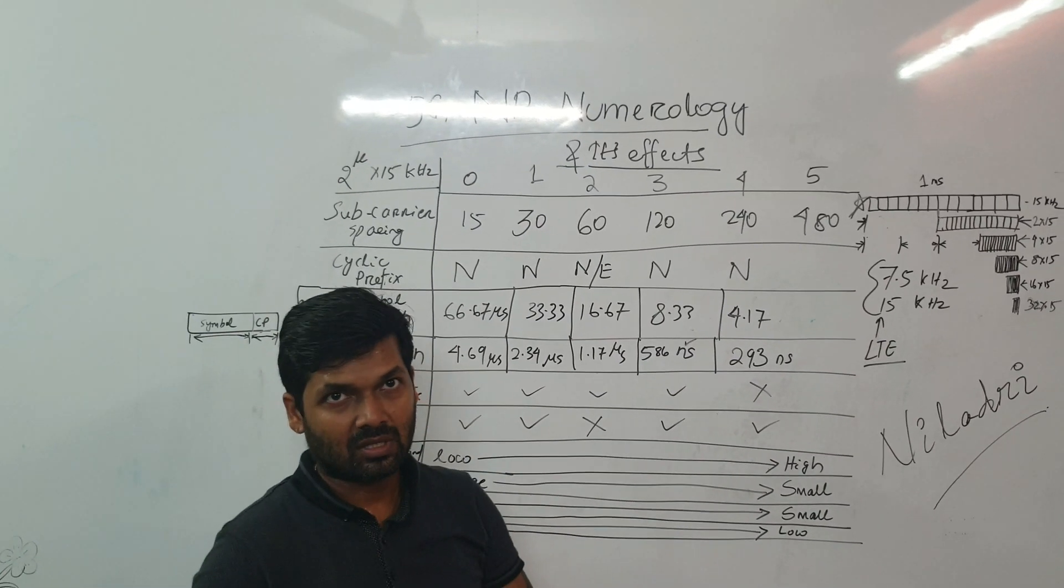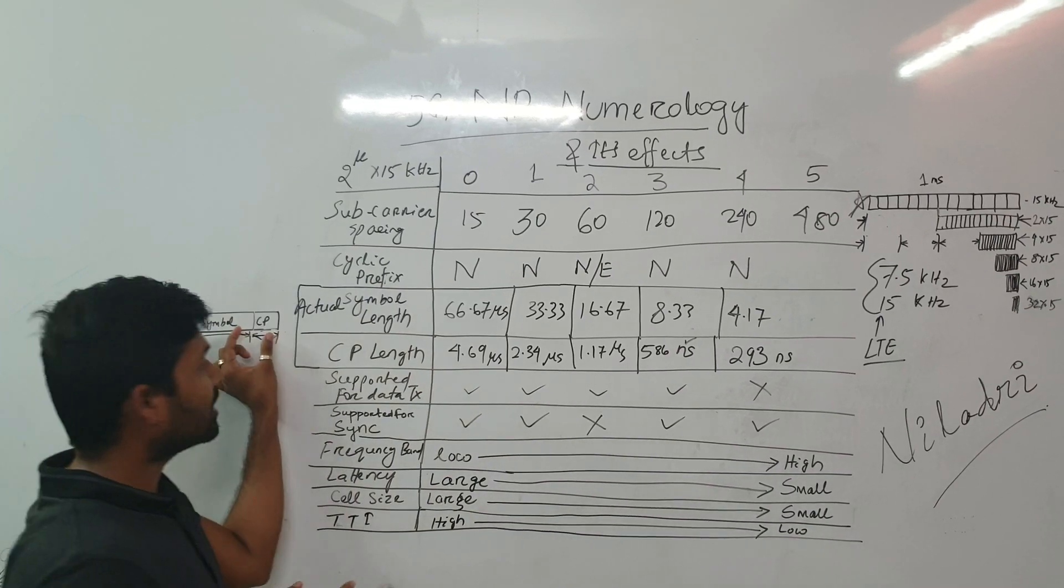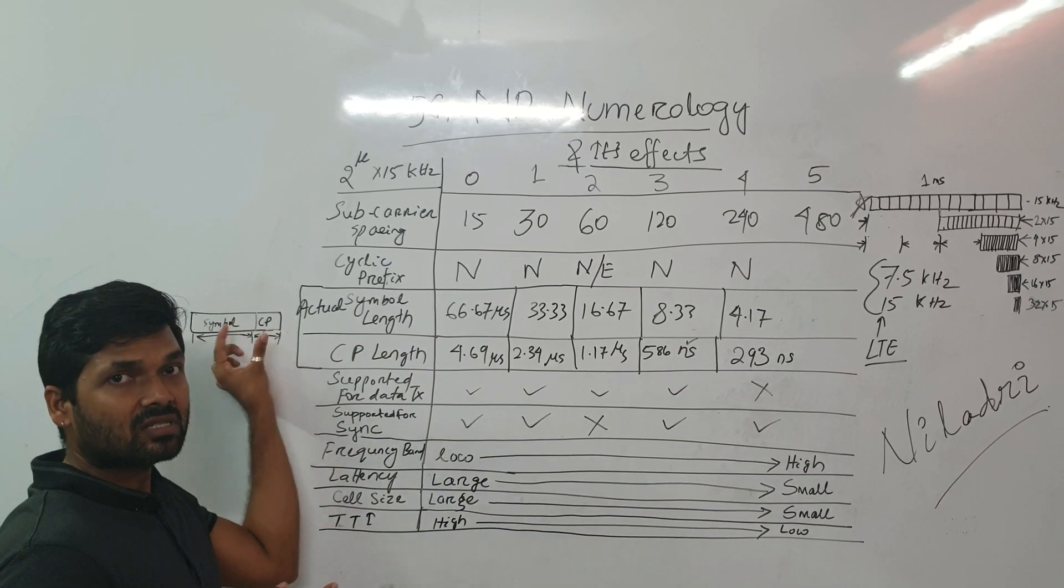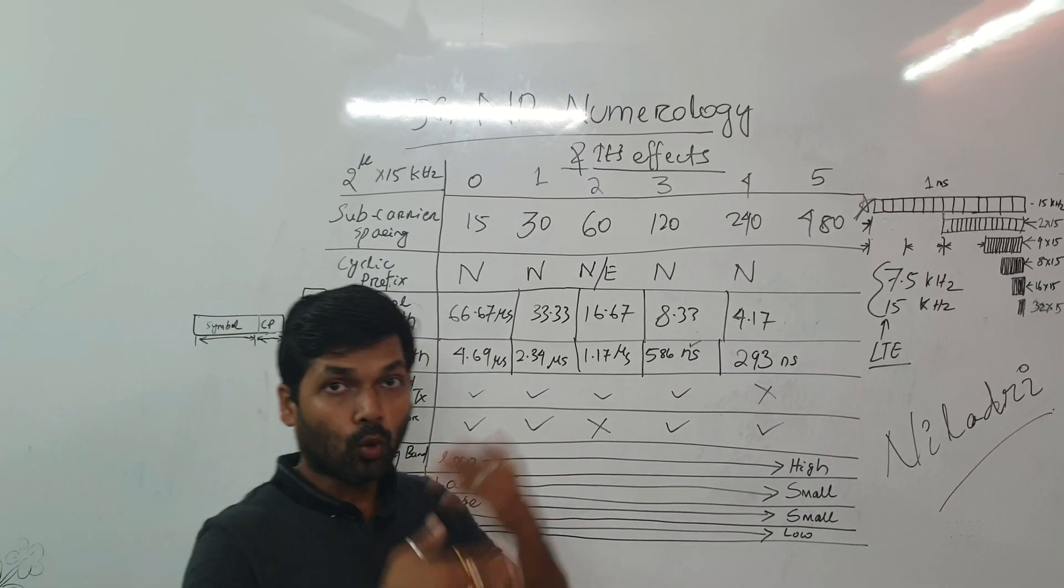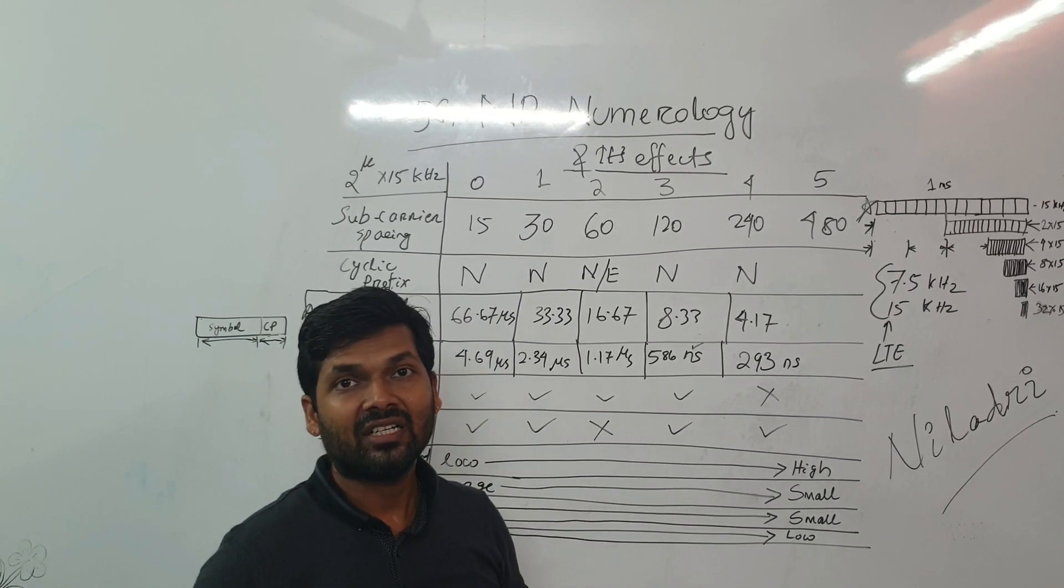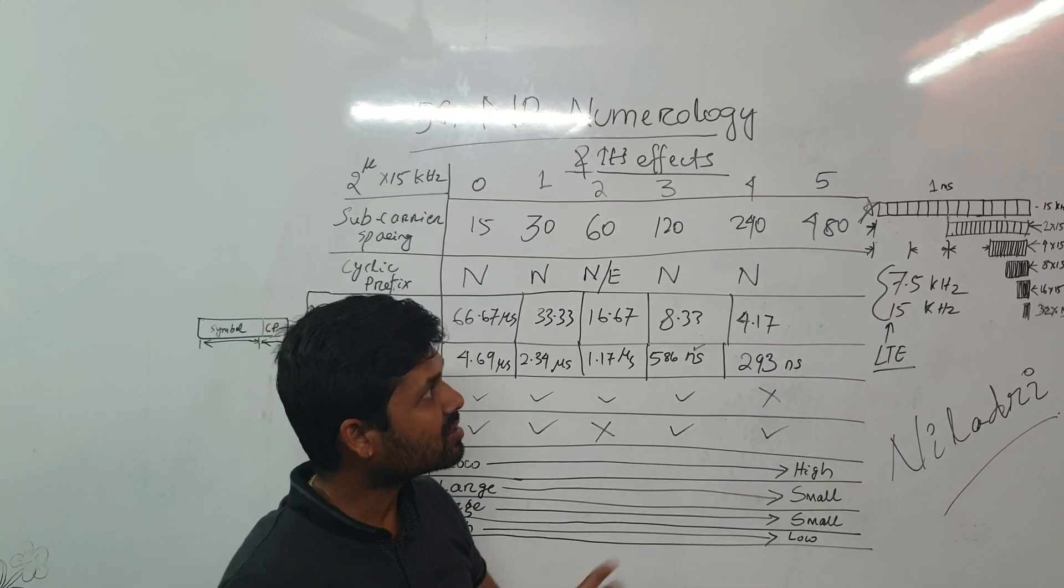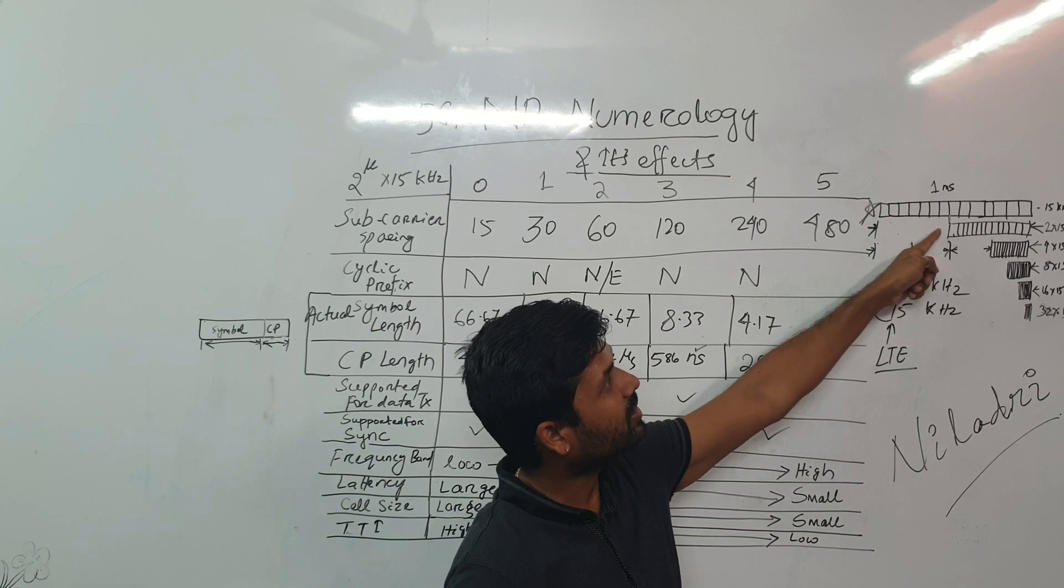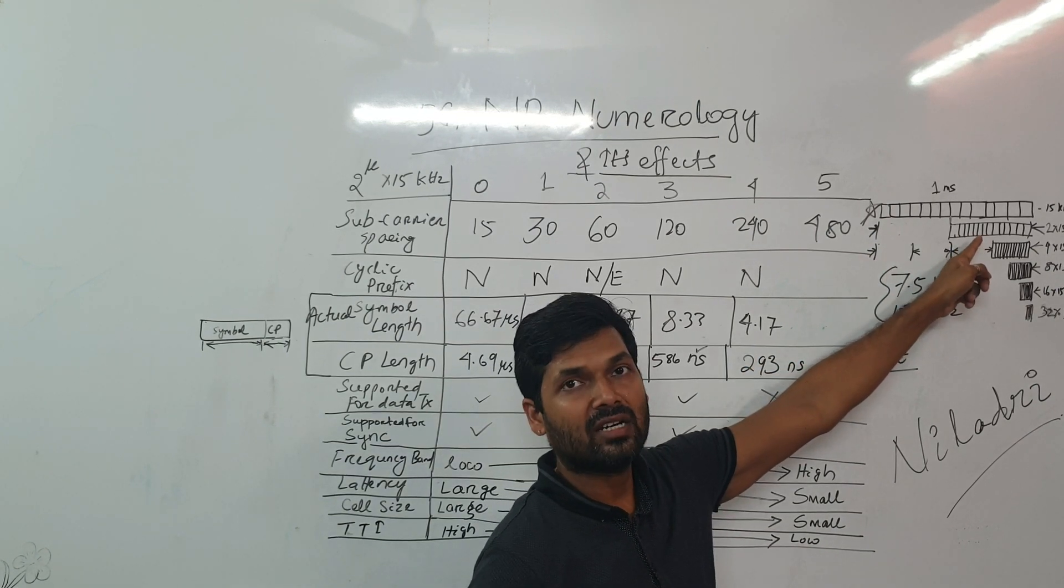That is normal cyclic prefix. If we are using extended cyclic prefix means the cyclic prefix is little longer for more robust mitigation for the inter-symbol interference. Then this symbols will be reduced. There will be 6 and 6.